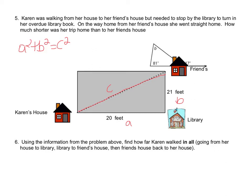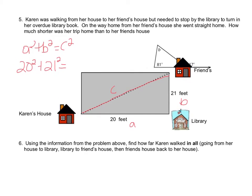We're going to square our two legs: 20 squared plus 21 squared. We get 400 plus 441, which is 841. That's C squared, so we take the square root and get C equals 29. Her distance straight home was 29 feet.